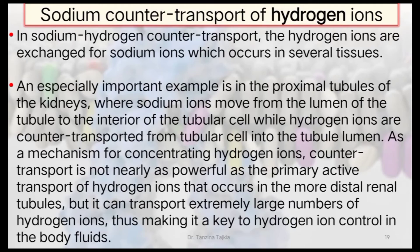In sodium-hydrogen counter-transport, hydrogen ions are exchanged for sodium ions, occurring in several tissues. An especially important example is the proximal tubule of the kidney, where sodium ions move from the lumen of the tubule to the interior of tubular cells while hydrogen ions are counter-transported from the tubular cell to the tubular lumen. Although not as powerful as primary active transport of hydrogen ions occurring in more distal tubules, it can transport extremely large numbers of hydrogen ions, making it a key mechanism for hydrogen ion control in body fluids.